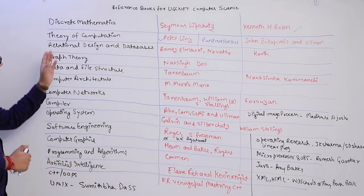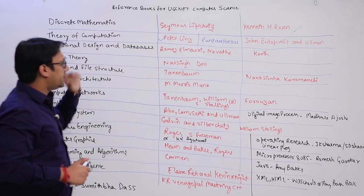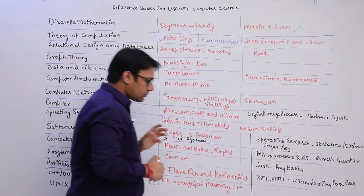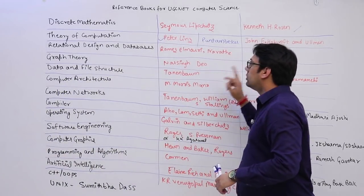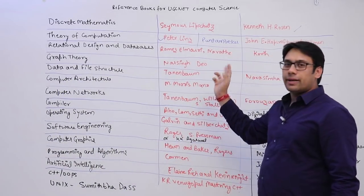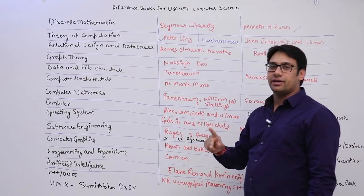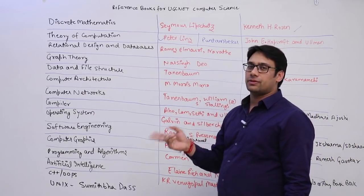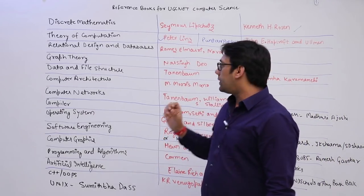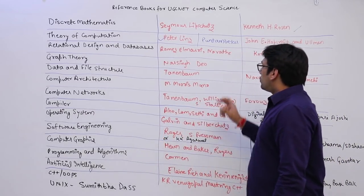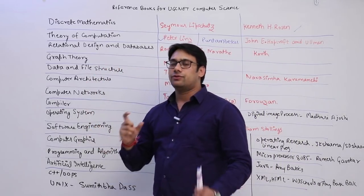For Databases — relational design in databases — we have two books: Navathe and Korth. You should buy both because some topics are covered better in Navathe and some topics are covered better in Korth, so you need to refer both books.